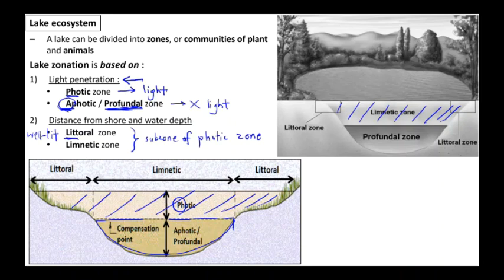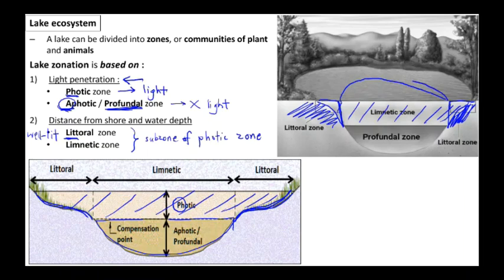Littoral zone is the part where it is still close to the shore. You can see from this picture, littoral is simply the part where it still consists of the shore. What about limnetic then? Limnetic is further into the middle of the lake and we say this is the open water area.